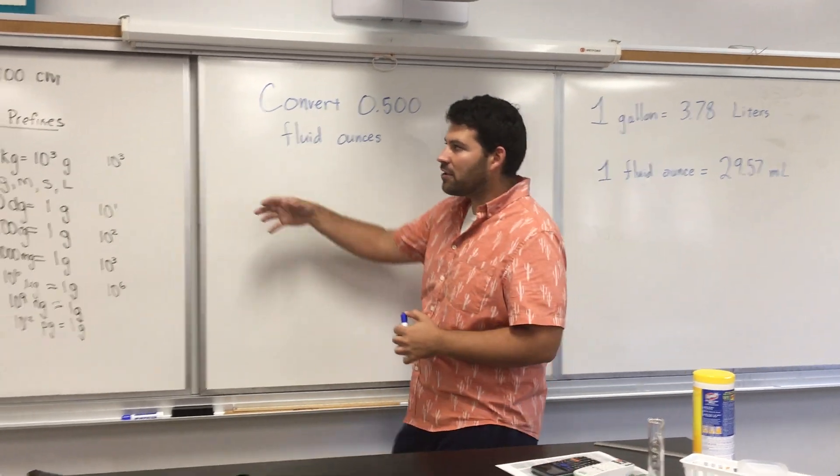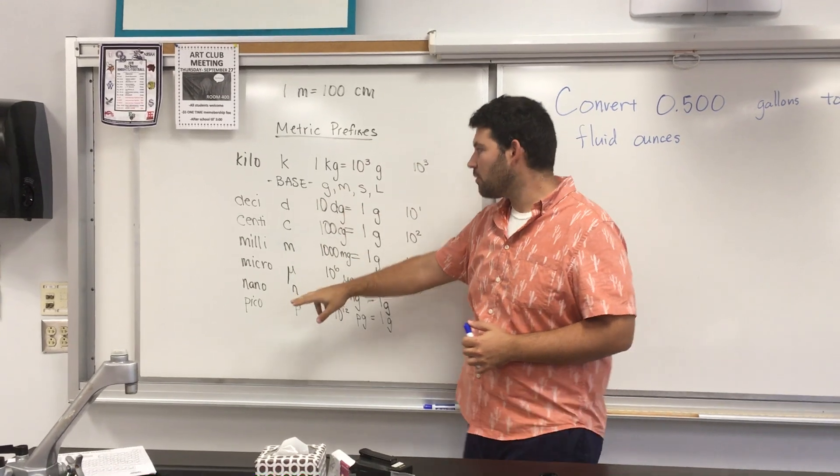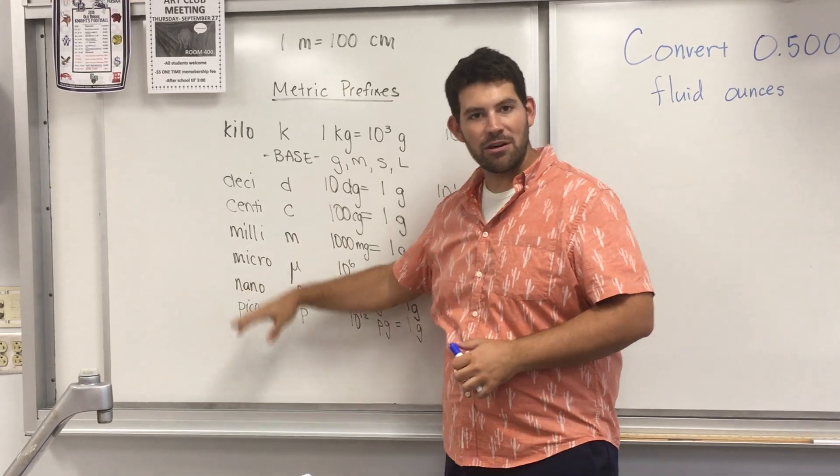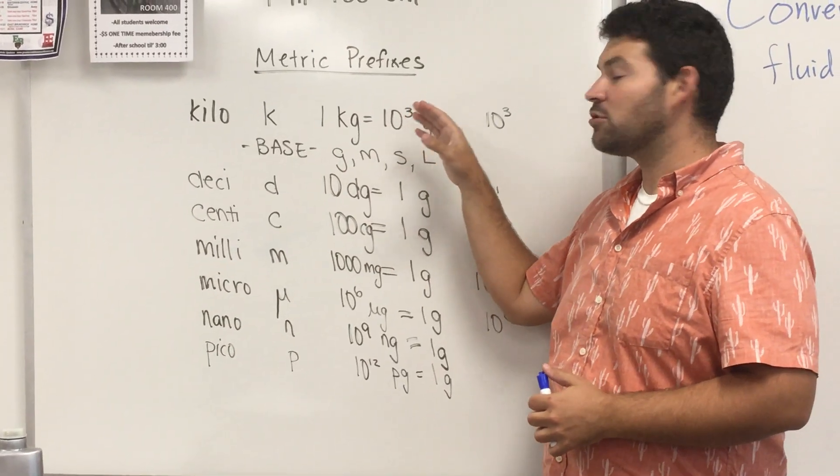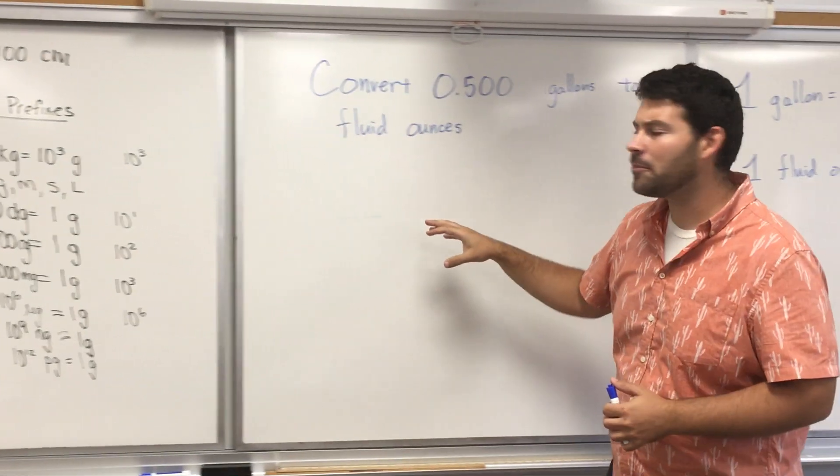So we have already seen the metric prefixes - kilo and desi and centi and milli and there's some other ones, micro, nano, pico. We can use metric prefixes to just move the decimal, but we're going to look at a slightly more complicated problem.